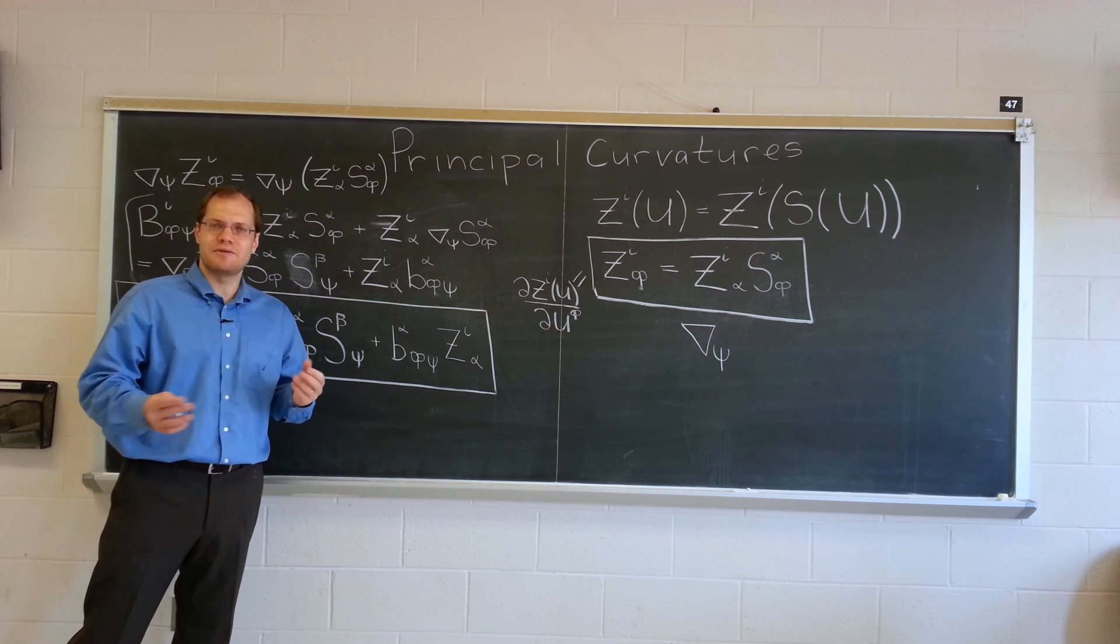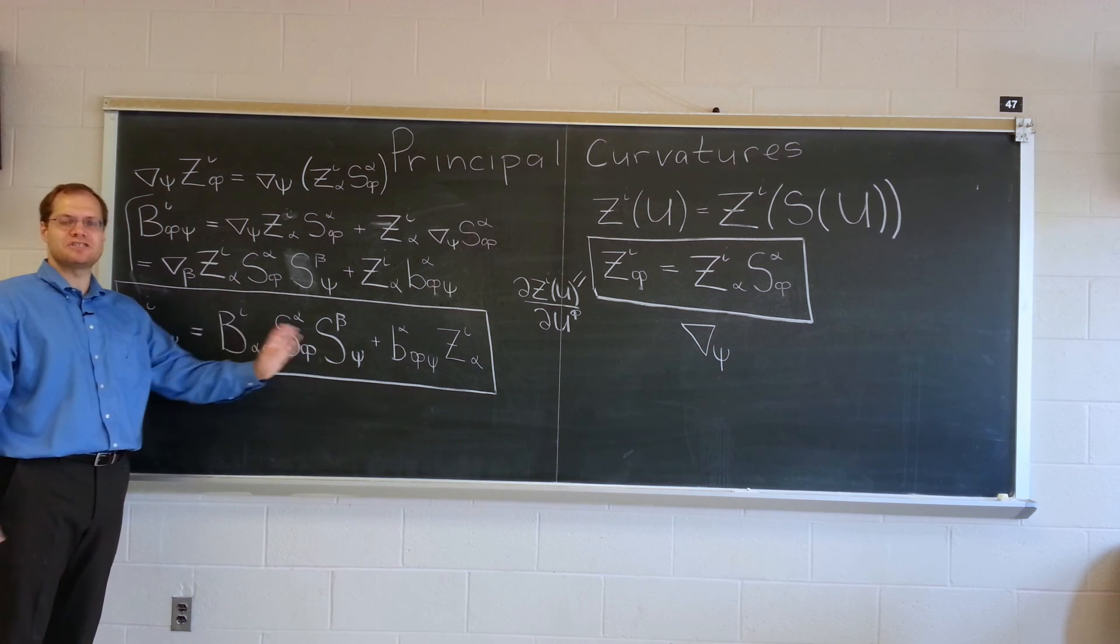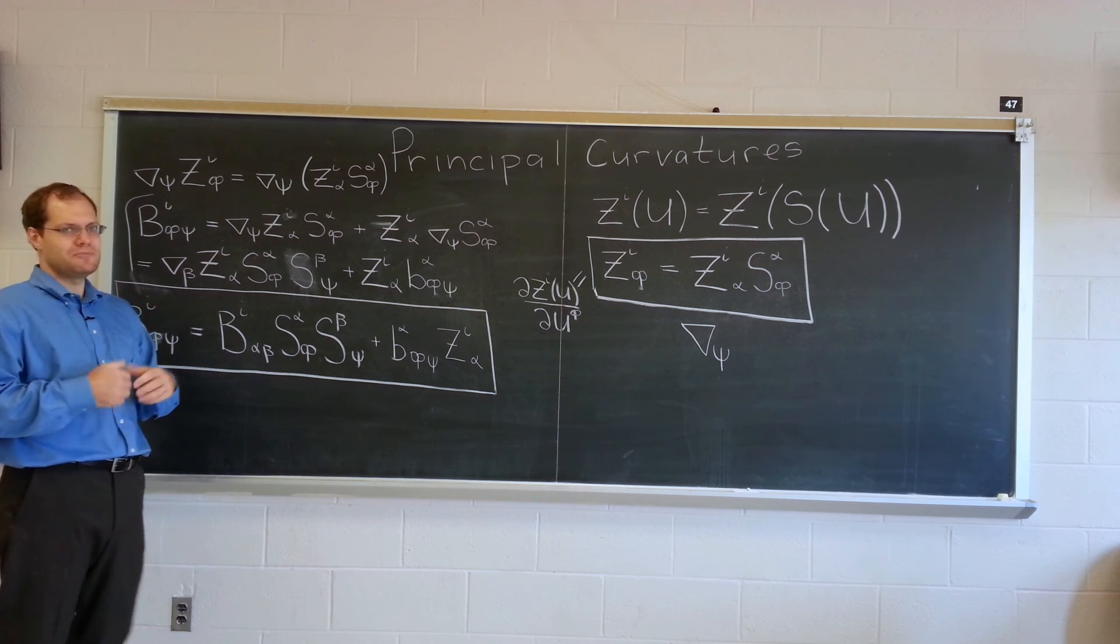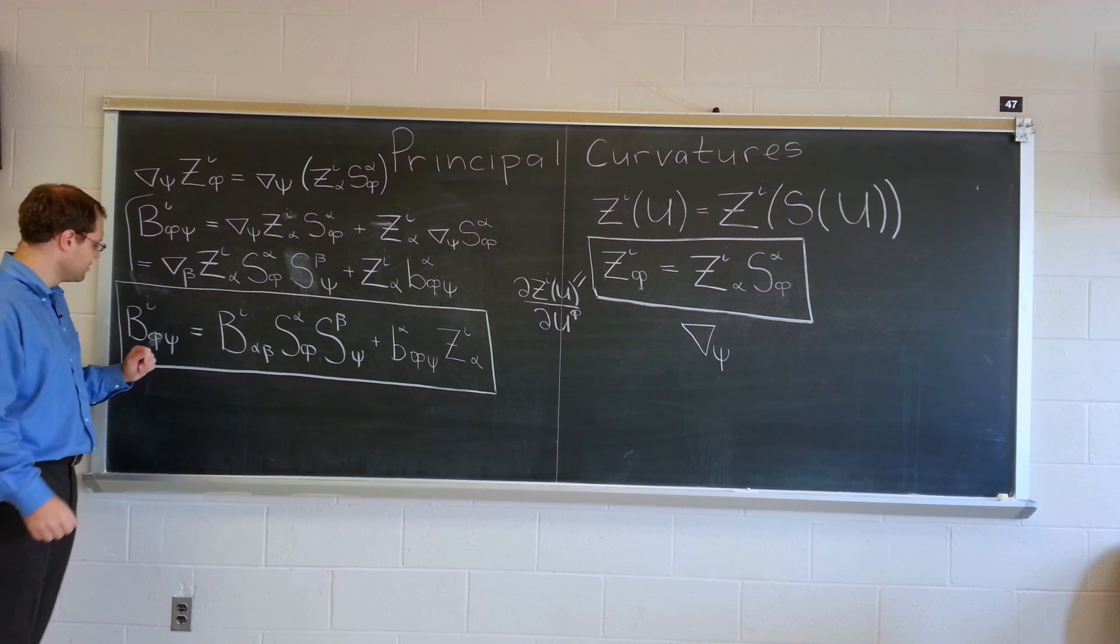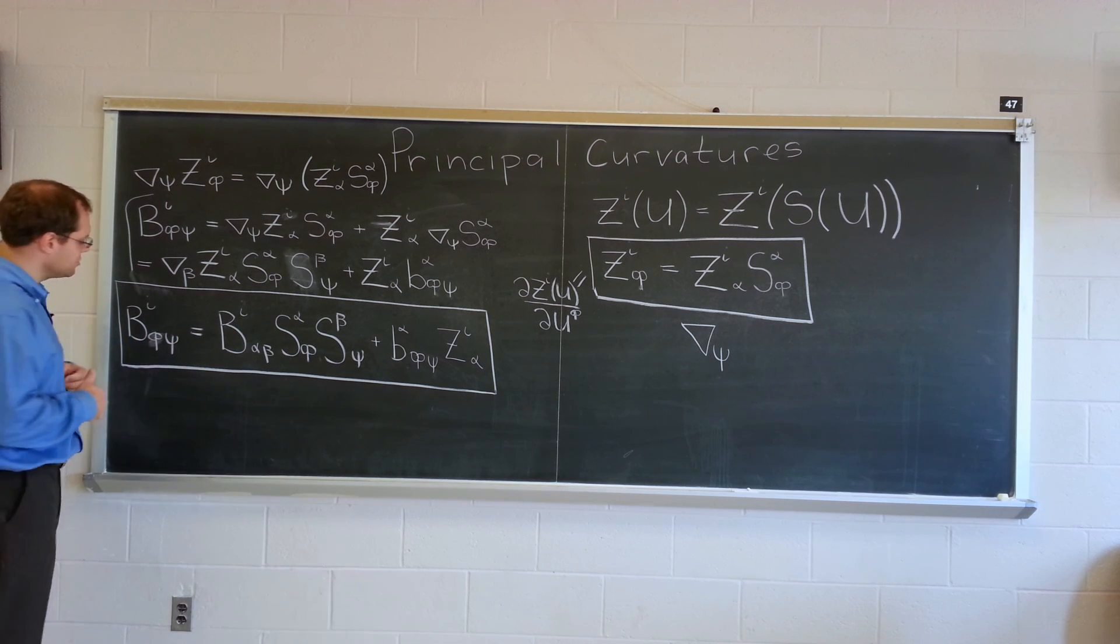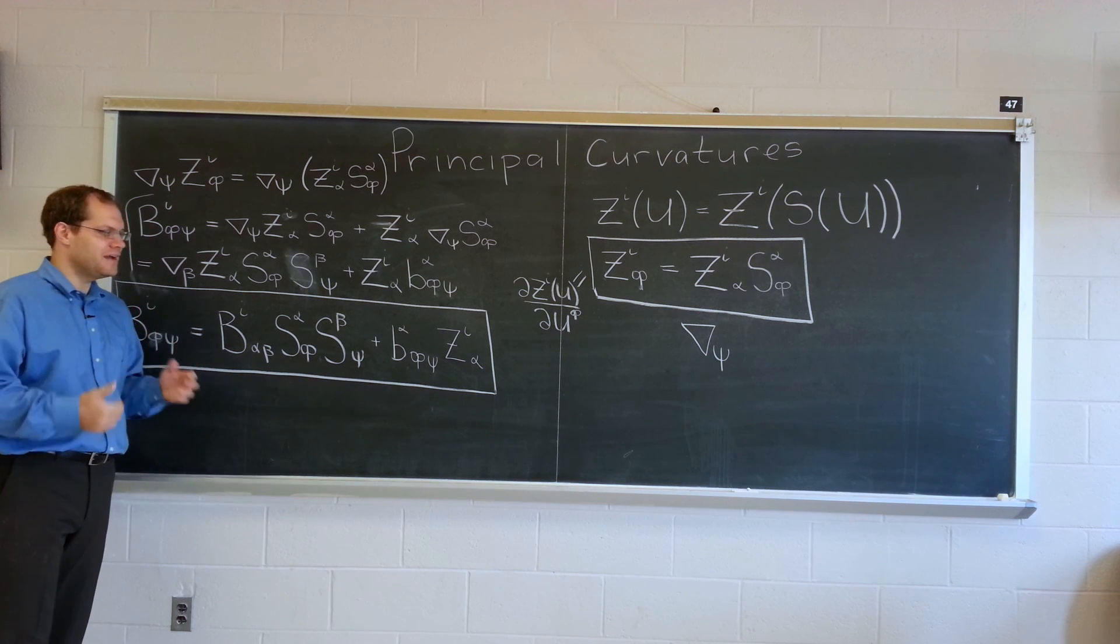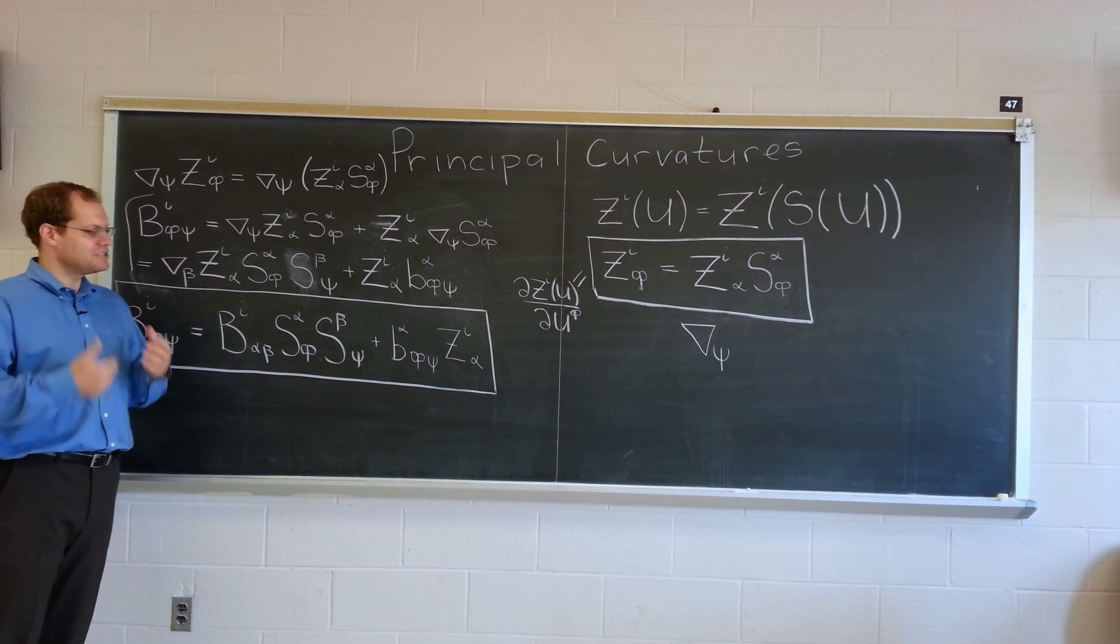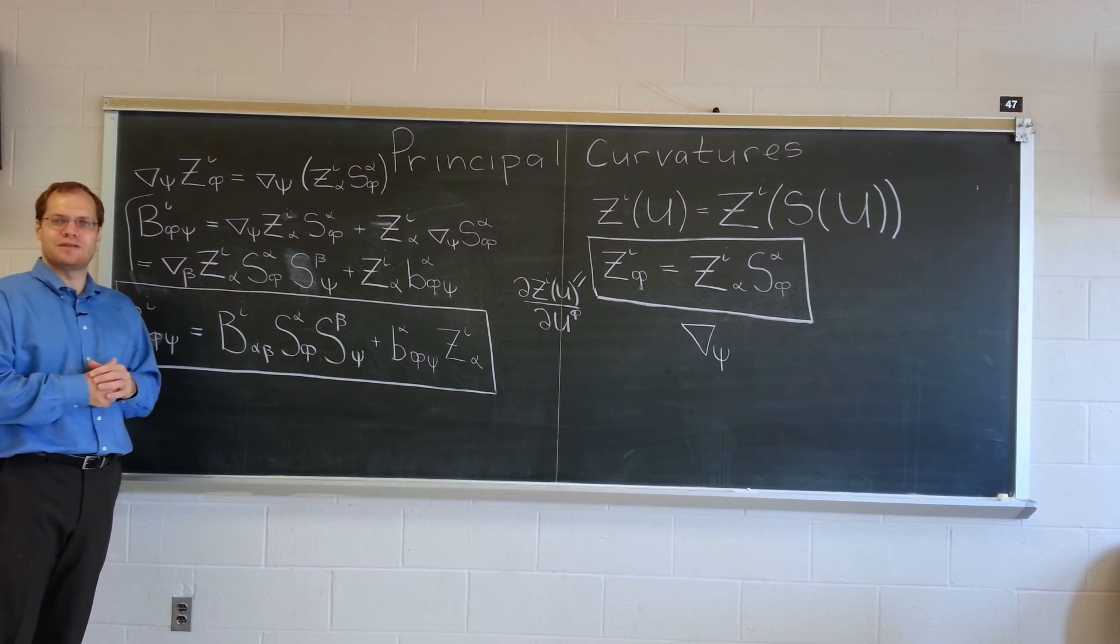It works in full generality with respect to the dimensionalities. This doesn't care at all what the dimensions of the embeddings are. It could even be n-dimensional embedded in n-dimensional spaces and so forth. This is a very general relationship. What else can I say about it? And it will have very, very many special cases.